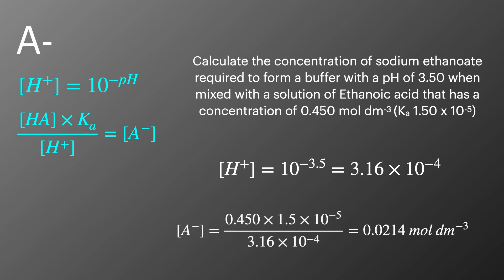And then we're going to use that Ka expression. We're going to put the numbers in from the question along with the concentration of hydrogen ions we've just worked out to get a concentration of A minus to be 0.0214 moles per decimetre cubed.